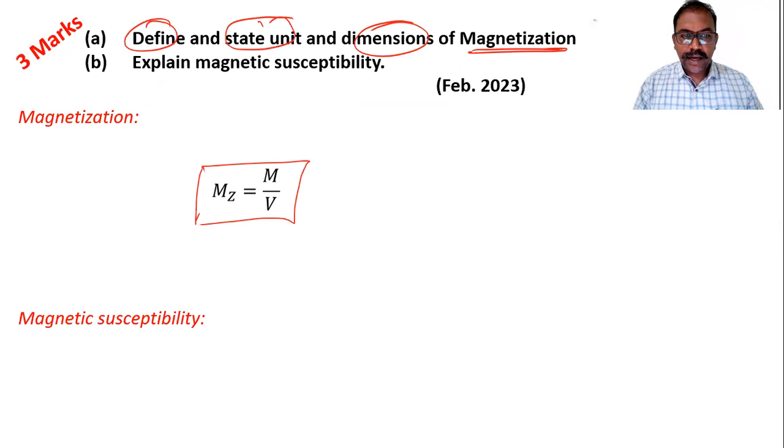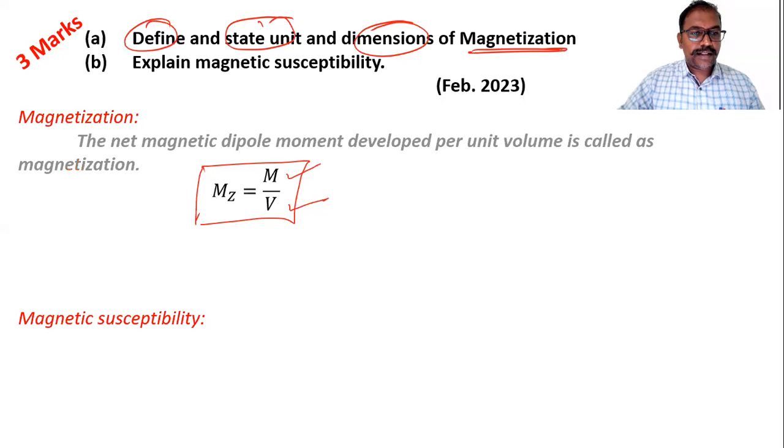M is magnetic dipole moment, net magnetic dipole moment, and V is volume. So you can write: net magnetic dipole moment per unit volume is called as magnetization. And then you can see the definition, then we have to write down its unit and dimension.